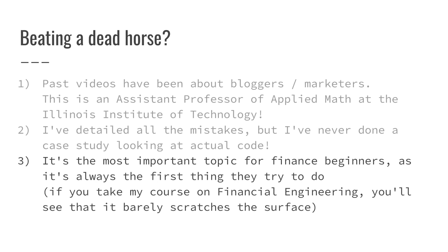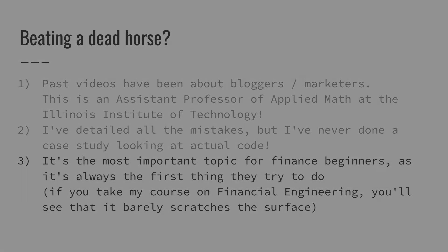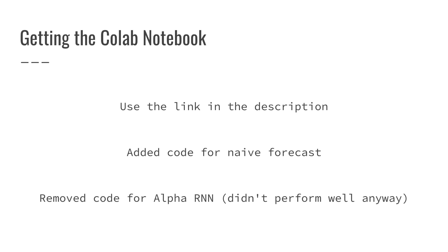Thirdly, in my opinion this is the most important topic to cover for beginners to finance, because it's always the first thing people try to do — they want to predict future prices so they know what to invest in today. If you take my course on financial engineering, you'll learn that price prediction barely scratches the surface of true finance. To get the code I've used in this video, please use the link in the description — it's a copy of the textbook code with added experiments. I also removed code for a different type of RNN called the Alpha RNN, which uses an old version of Keras, as removing it doesn't affect results.